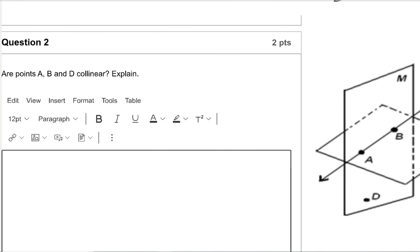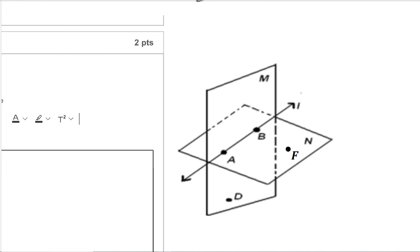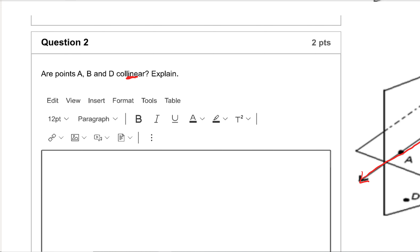Next: are points A, B, and D collinear? Remember the word 'line' is in 'collinear,' so it means are they on the same line? A and B are up here on line L. Is there a way to draw a straight line that connects A, B, and D? There is not — I can connect A and D, I can connect B and D, but I cannot connect A, B, and D all together. So A, B, and D are not collinear. The basic answer is they don't lie on the same line.